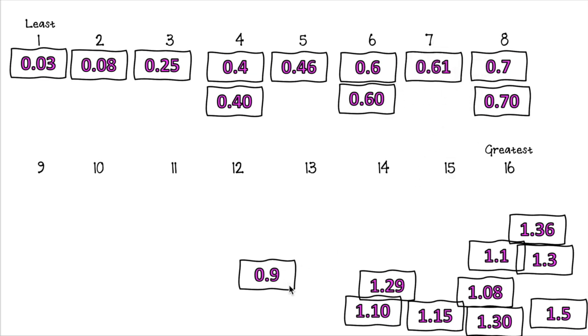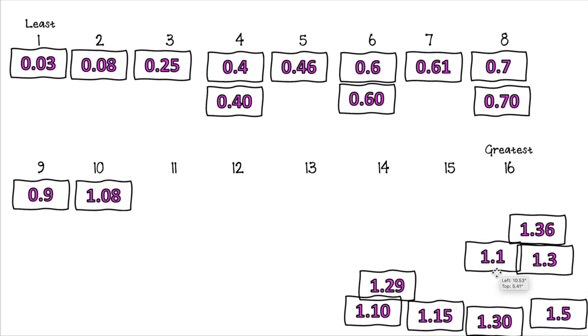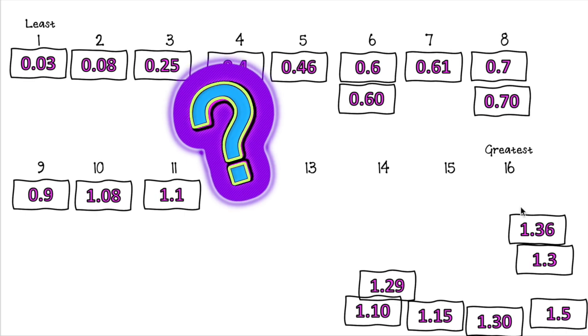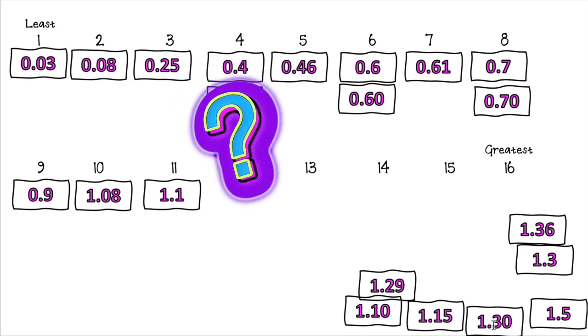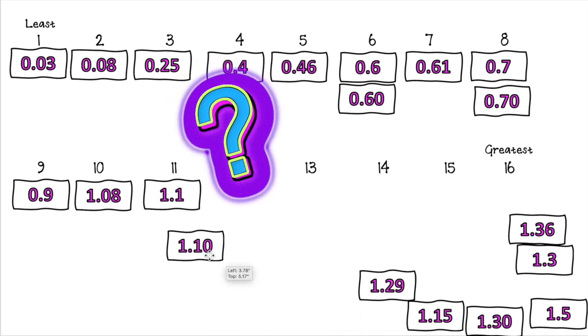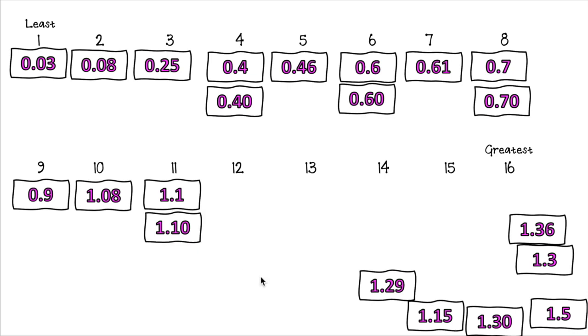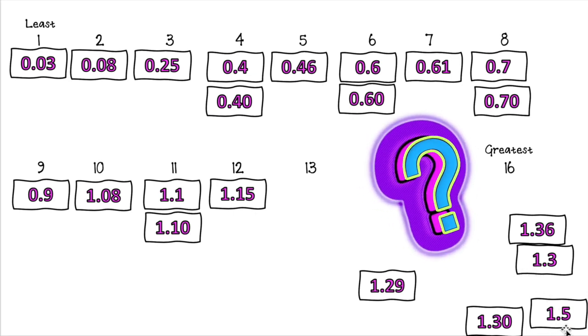I have 0.9, this will be like 90 hundredths. This will be the smallest one because it's just one whole and 8 hundredths. And then I have one whole and one tenth, which is equivalent to what? Can you figure it out? If you said this one, you are correct.